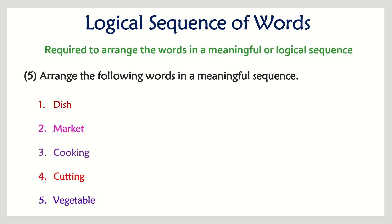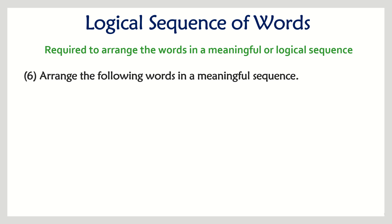Next question: dish, market, cooking, cutting, and vegetable. Initially, we go to the market first, then we buy the vegetables. Then we cut the vegetables, and once you cut the vegetables you start cooking. Once you cook, your dish is ready. That is the logical sequence.